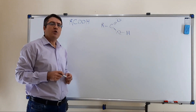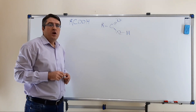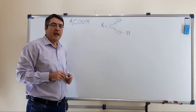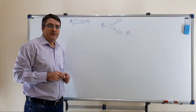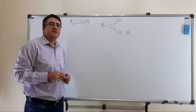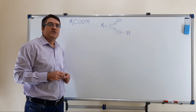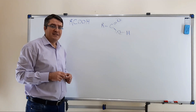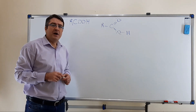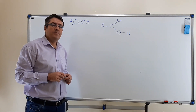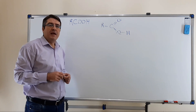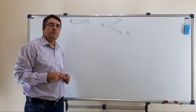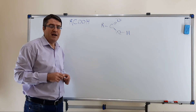In IUPAC nomenclature, carboxylic acids are named by adding the suffix '-oic acid', or by use of the suffix 'carboxylic acid'. For example, alkane becomes alkenoic acid. Methane becomes methanoic acid, ethane becomes ethanoic acid, and so on.